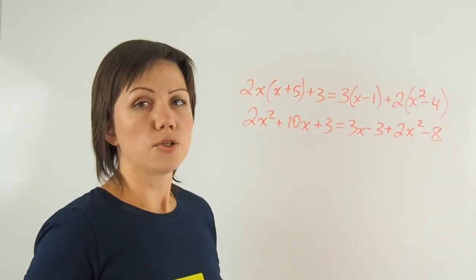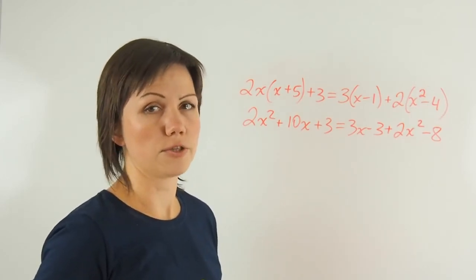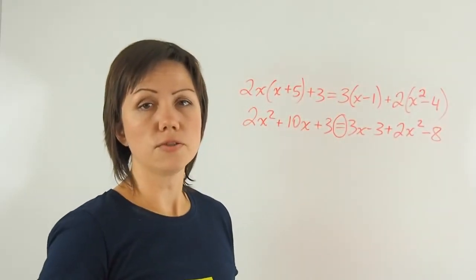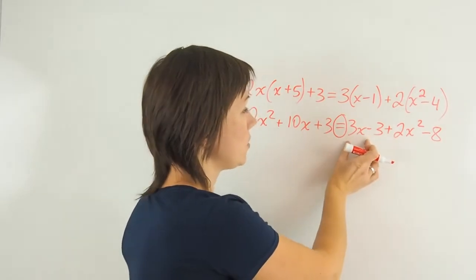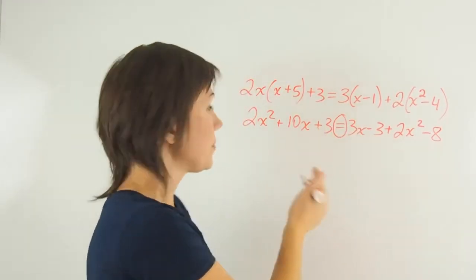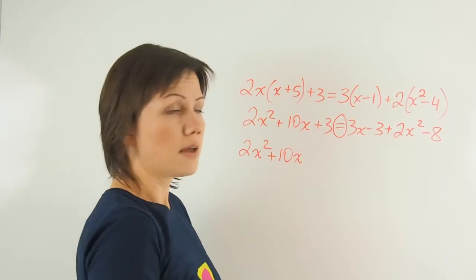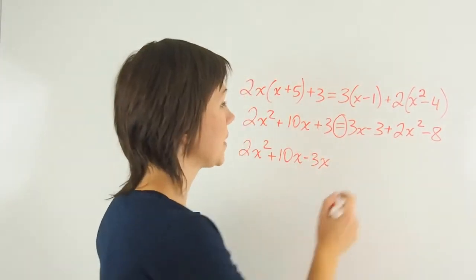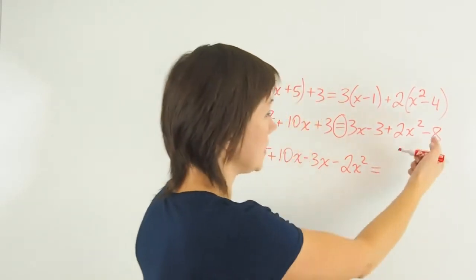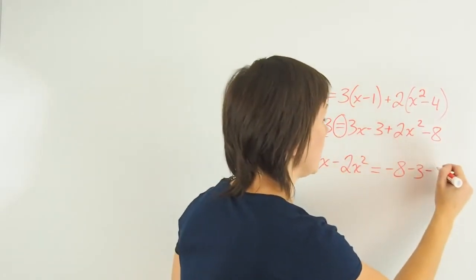The next step is to group the variables on the left and the constants on the right, keeping their coefficients. When I move my terms around the equal sign, I change their sign to the opposite. So if I move 3X to the left where all the variables will be, I will make it negative 3X. 2X squared will remain here, 10X is already here. Then I'll move 3X to this side, negative 3X, and then 2X squared as well, negative 2X squared on the left. Negative 8 is already there, negative 3 is already here, and I'll move positive 3 to the other side and make it negative as well.